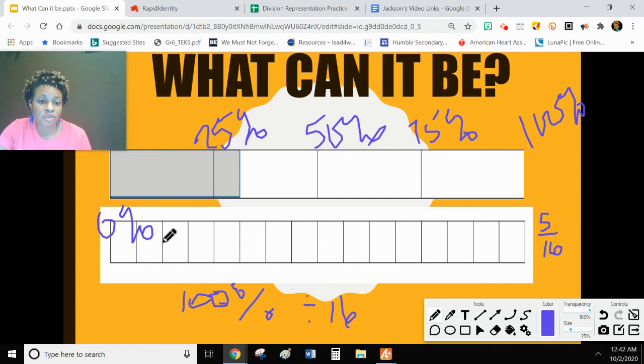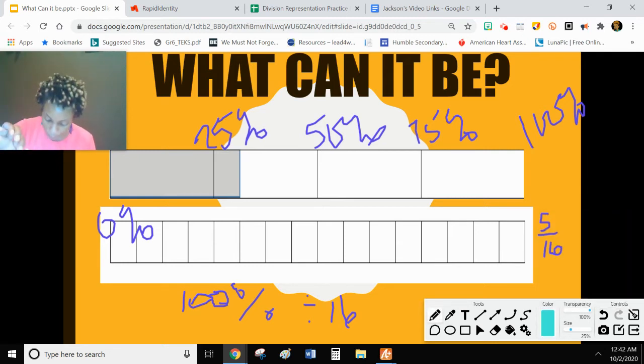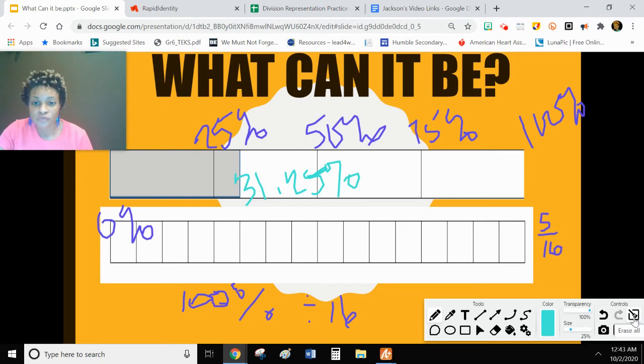And I said that I had 1, 2, 3, 4, 5 shaded. So 5 times 6 is about 30%. So if you want it to be really accurate, the shaded portion represents actually 31.25%. So that is in our range, right? We said greater than 25, but less than 50. So 31% is in that range. Let's have some reasonability when we're figuring out what it can be.